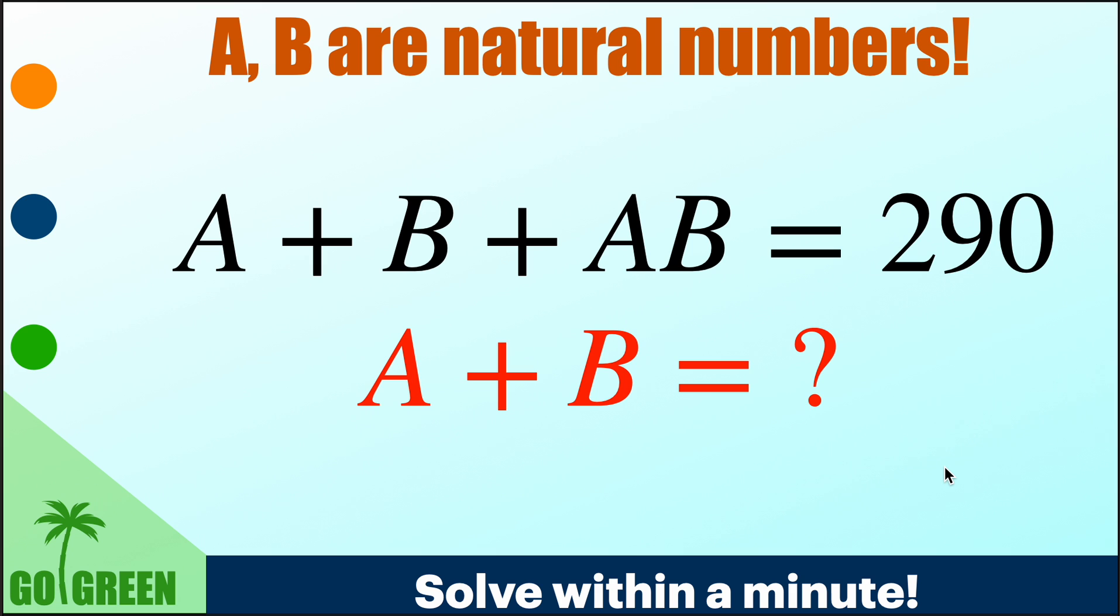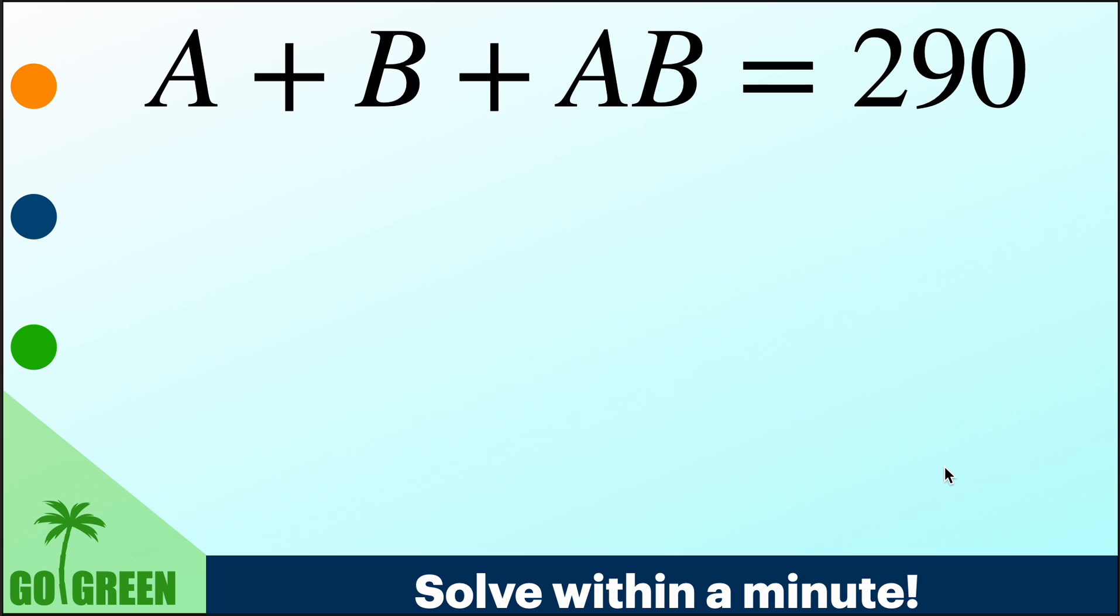So otherwise we shall move on. There is a trick and unless you know the trick, it may be difficult to solve this problem right away. So the problem given is here A plus B plus AB equal to 290 and we want to calculate the value of A plus B.